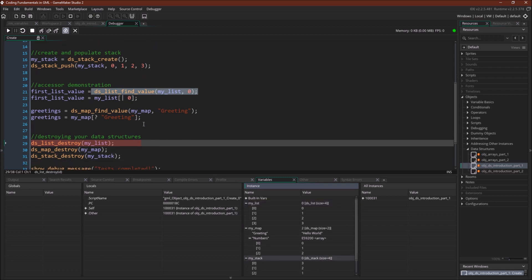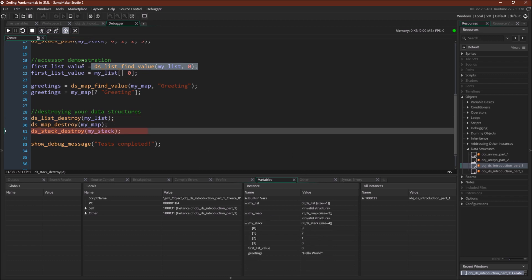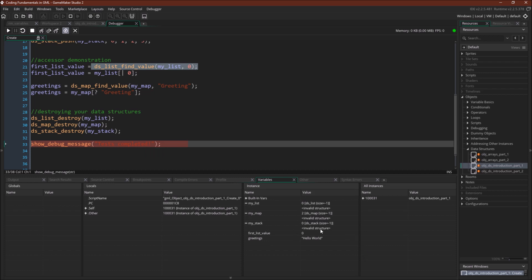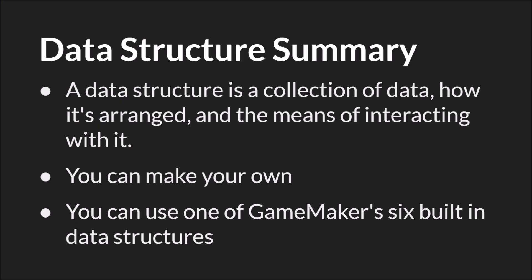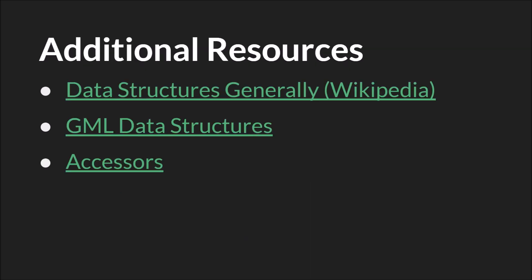Now we destroy each of the data structures — destroy our list: invalid structure. Destroy our map: invalid structure. Destroy our stack: invalid structure. They're all destroyed. We'll talk more about why you need to do this in part two. In summary, a data structure is a collection of data, how it's arranged, and the means of interacting with it. You can make your own, or use one of GameMaker's six built-in data structures. The data structure variable is a reference, but it's not a specific data type like with an array — it's just an integer. So you must always tell GameMaker Studio 2 what type of data structure you're interacting with, either with built-in functions or with the accessor. Thanks for watching.